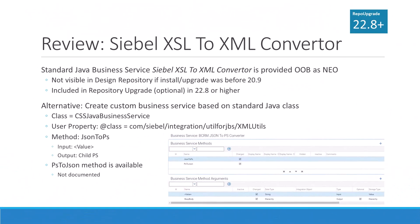Staying with the REST framework a bit longer, developers will find reason to rejoice with the addition of the business service known as Siebel XSL-to-XML Converter to their master repository. If you run the optional repository upgrade in 22.8 or higher, this business service is finally visible in the design repository, so developers no longer have to work around it with a custom business service. The XSL-to-XML Converter is a Java business service and, despite the lack of reference in its name, supports the conversion of the Siebel proprietary property set to JSON and back.